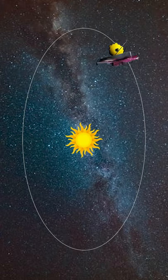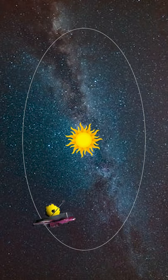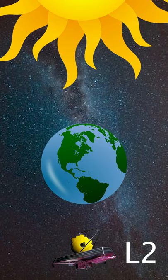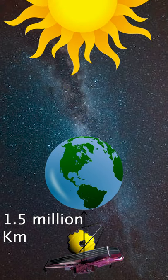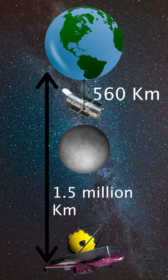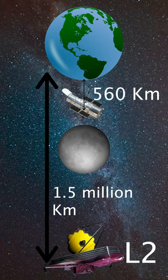James Webb will not actually orbit the Earth but it will orbit the Sun near the second Lagrange point, L2, of the Earth-Sun system, which is 1.5 million km away, directly opposite to the Sun. L2 is four times further away than the Moon.